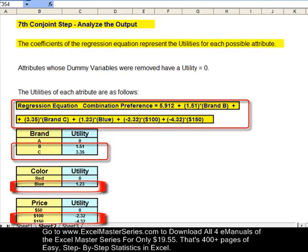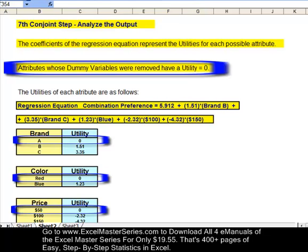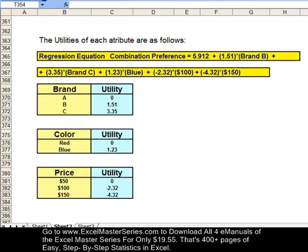We're going to analyze the output right here. All of the utilities, the zero utilities, are the dummy variables that were taken out. Those utilities have the value of zero. We removed dummy variables A, color red, and price 50, and they all have utilities of zero. The other utilities are the coefficients of the regression equation, as we can see right there.